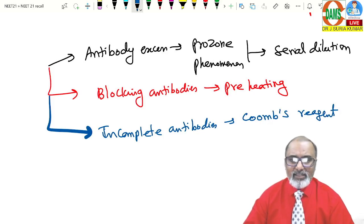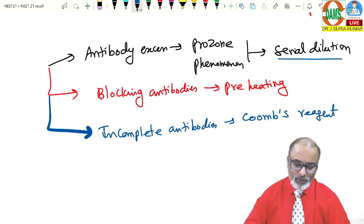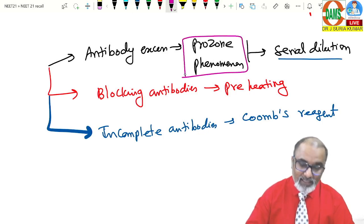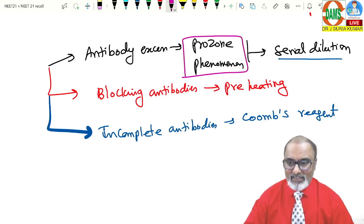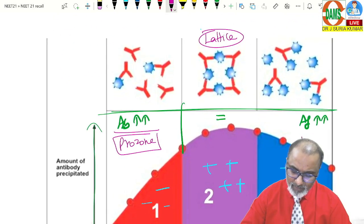And here they can clearly give, it is initially it was negative. When serial dilution, it become positive. It is mainly due to prozone phenomenon where the antibody is excess. If the antigen is excess, that is called post-zone phenomenon.